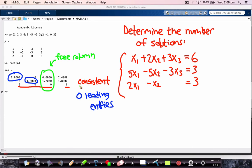So as the system is consistent and has a free column, we know now that it has infinitely many solutions.